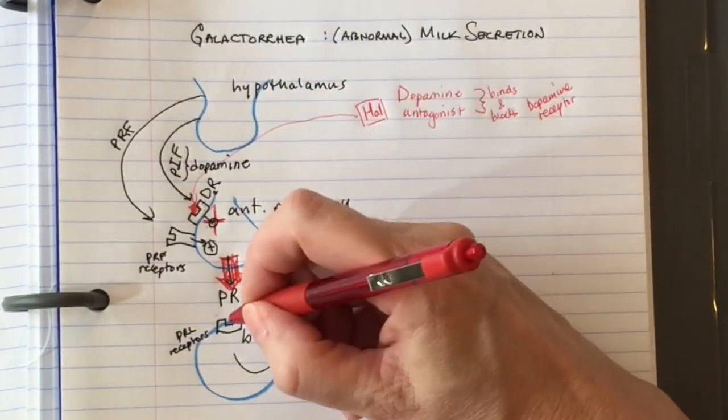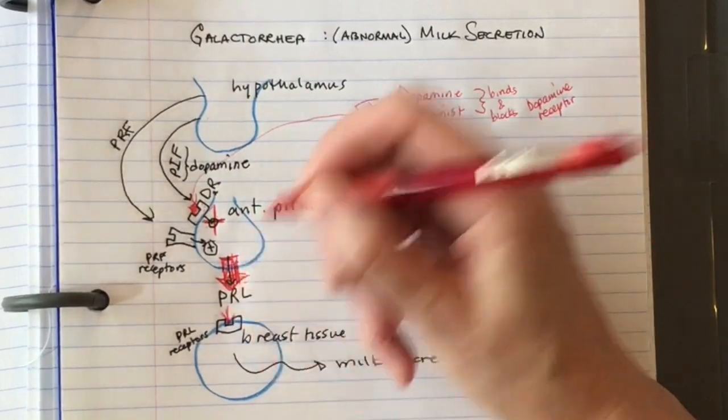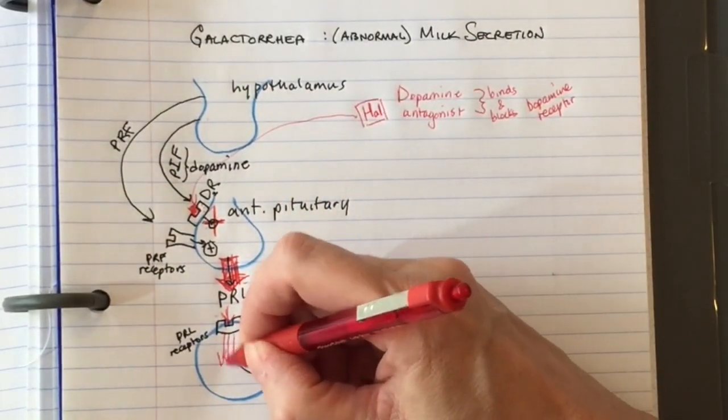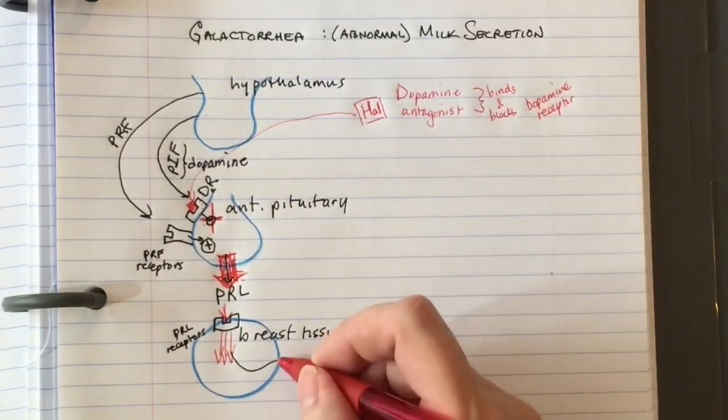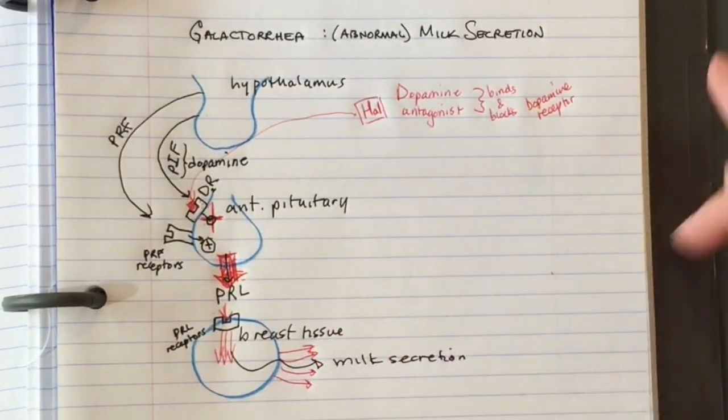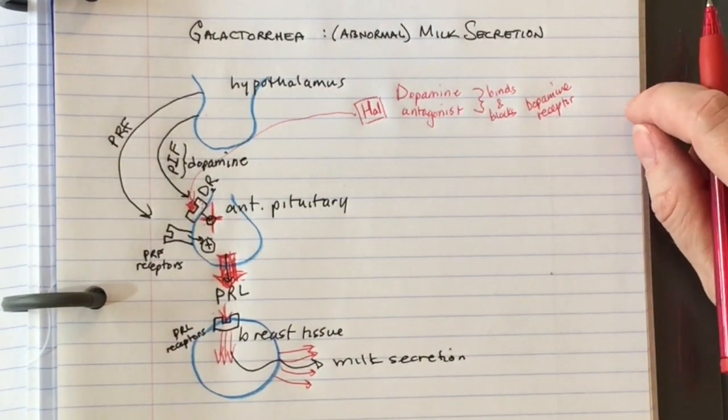If you have more prolactin, you have more binding to the prolactin receptor, which means more milk secretion. This is true for any dopamine antagonist.